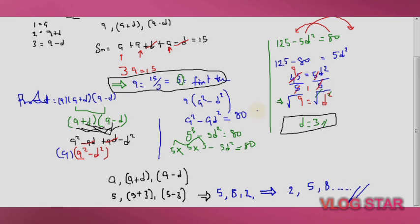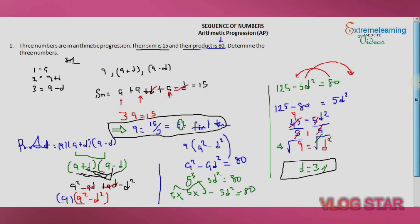These are the three numbers required, where their sum is 15 and their product is 80. Thanks for watching. This is Extreme Learning Website — feel free to follow us. In the next video we'll be looking at more on arithmetic progression. Thank you.